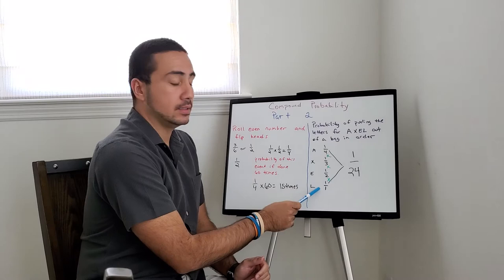And the chance of the L, 1 out of 1. We multiply all those scenarios and we're left with 1 over 24 is the probability of pulling axle out of a bag. See you next time.